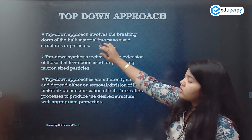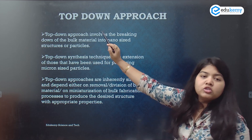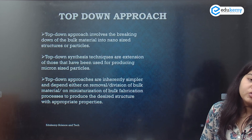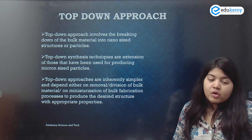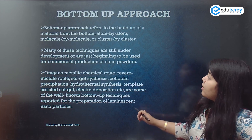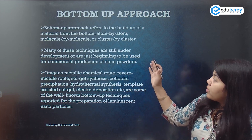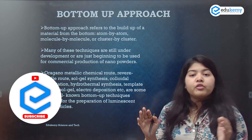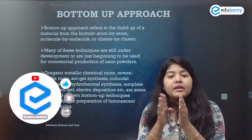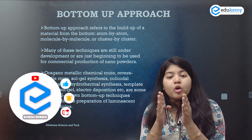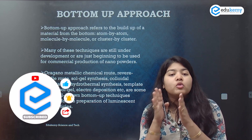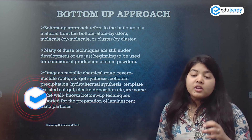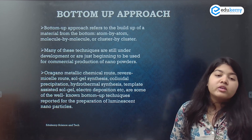The top-down approach involves breaking down bulk material into nano size. In the bottom-up approach, you build up material atom by atom, molecule by molecule, cluster by cluster — such as nanopowders, etc.